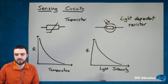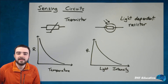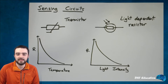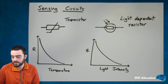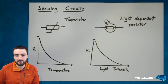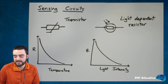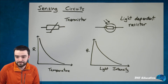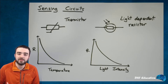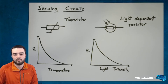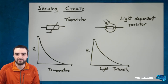Both of these components have the ability to vary resistance depending on an outside variable — in the case of the thermistor, the temperature, and in the case of the LDR, the light intensity. But how can we make this useful within a circuit? We can consider them in the context of potential dividers.